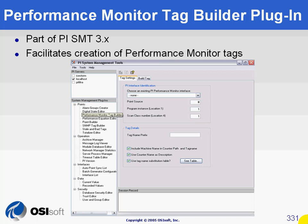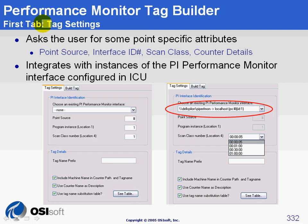A great tool you can use to configure Performance Monitor tags is the Performance Monitor Tag Builder plugin, found under Points in the System Management Tools. The first tab, called Tag Settings, will ask you for some generic information such as the Point Source, Interface ID, and the Scan Class to link the tag to a specific instance of the Performance Monitor Interface, along with some more details to configure your tags.